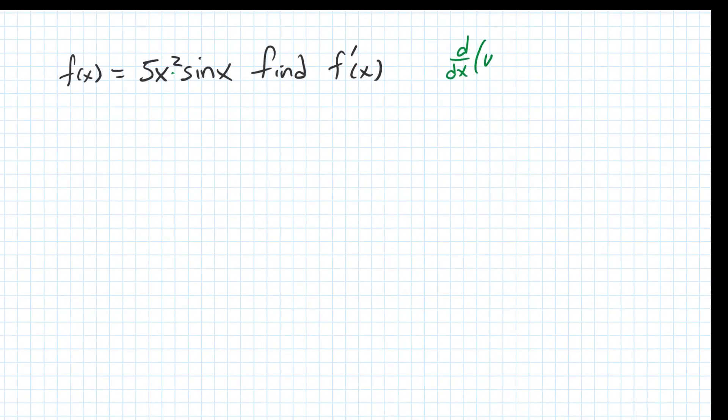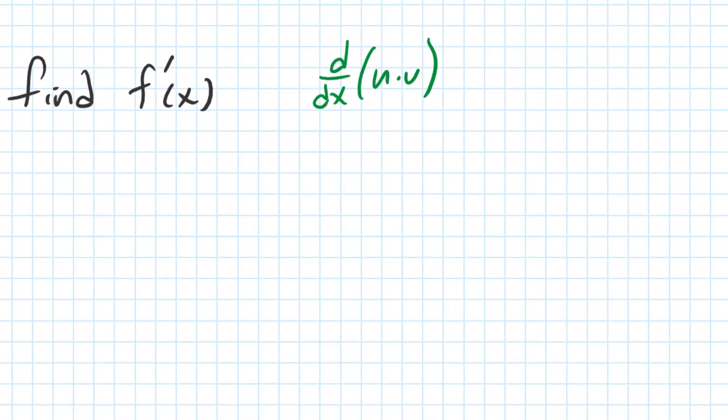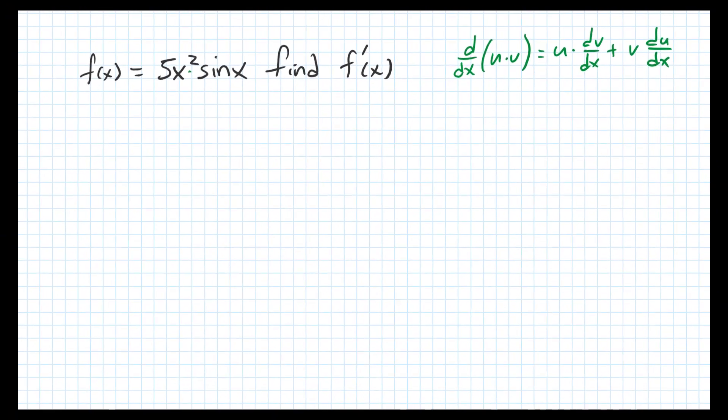The product rule says when you take the derivative of the product u times v, that's equal to u times the derivative of v with respect to x, plus v times the derivative of u with respect to x.